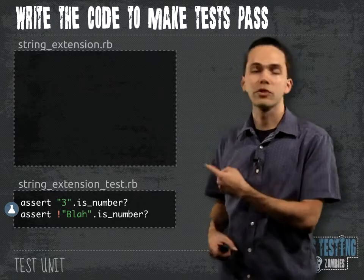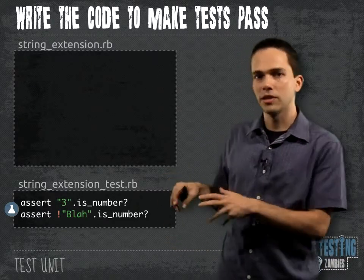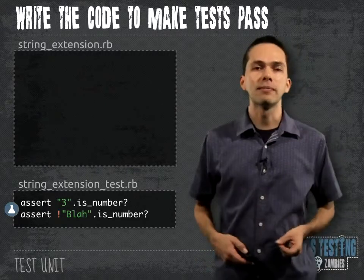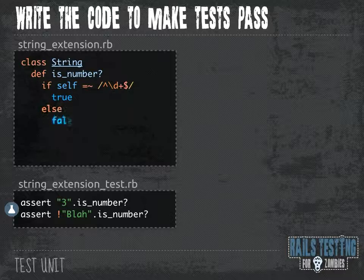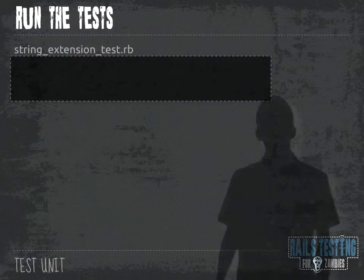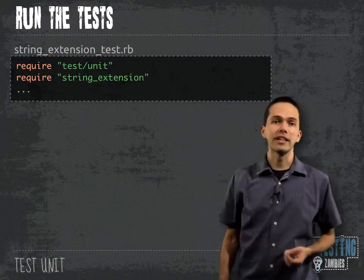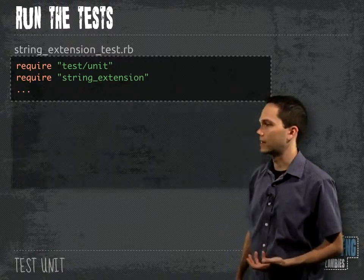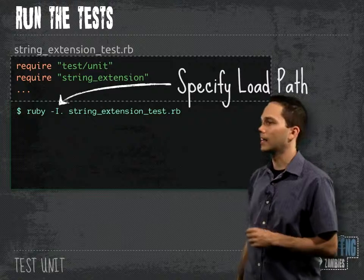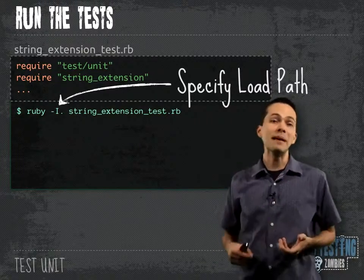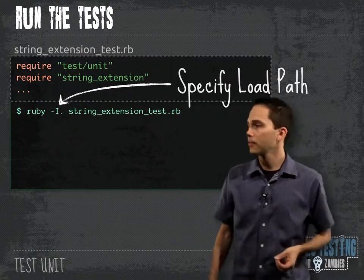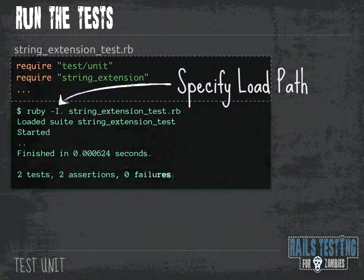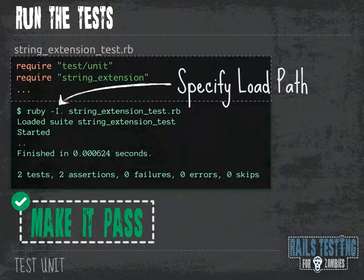Now that we have failing tests, we can go ahead and try to implement the method. To implement our code, we're going to create a new file called stringExtension. The first thing we're going to do is open up the string class, and inside there we're going to define an is_number method. We're going to check to see if the current string has all numbers using a regular expression — if it does, we return true, otherwise false. We need to go back into our test file and include that string extension. When we run the test, specifying dash capital I dot to set the load path, two tests were run and we made them pass.